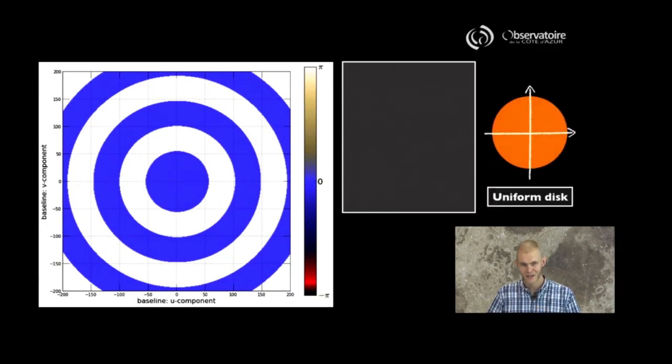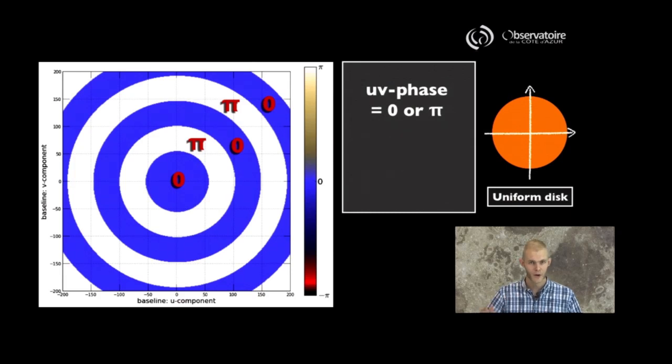If we go back to what the phase structure looks like for a uniform disk, this is what we have. We have a series of concentric structures and what we see is that no matter where we look in the UV plane, the phase that we're going to sample is always going to be 0 or π.